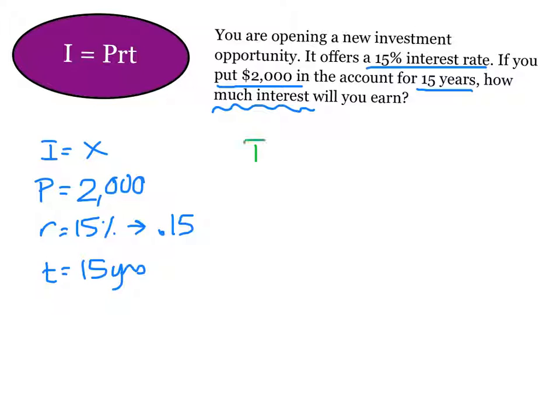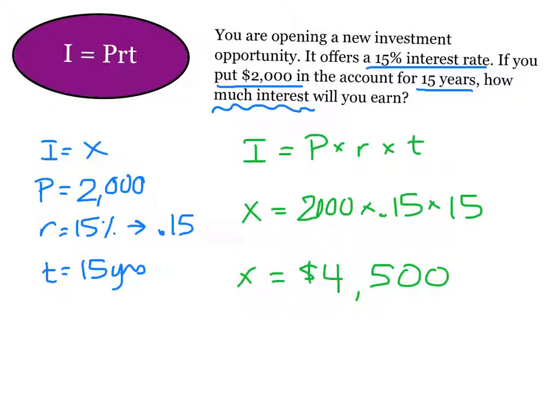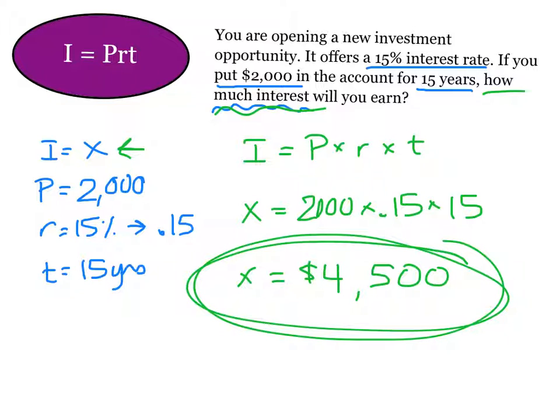Plugging it into the formula. I equals P times R times T. X equals 2,000 times .15 times 15. X equals $4,500. So how much interest? Interest is our I. We earned $4,500 in interest on this investment opportunity.